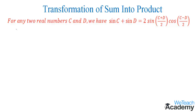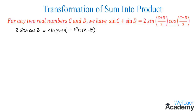Observing the right-hand side, which is in the form of 2·sine(a)·cos(b), we already know the formula: 2·sine(a)·cos(b) is equal to sine(a plus b) plus sine(a minus b). In this formula, sine(a) and cos(b) are the product of two different trigonometric ratios.